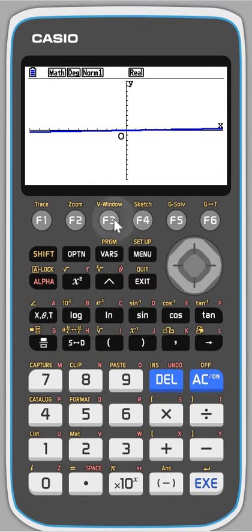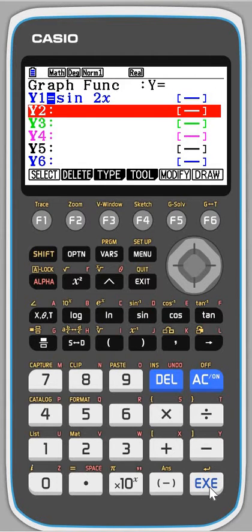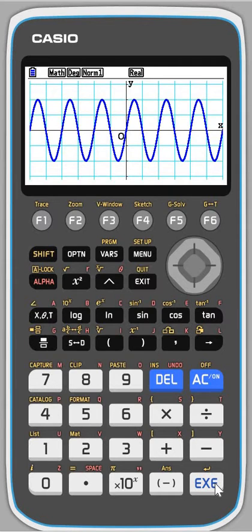So I press F3 for view window, and at the bottom you can see trig. So if you haven't got a crazily adjusted, manipulated, transformed trig graph, you can just do this. Okay. There, and that worked.